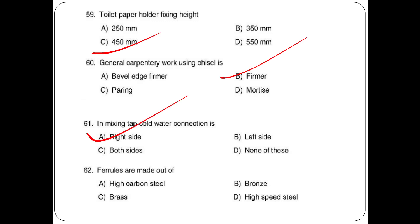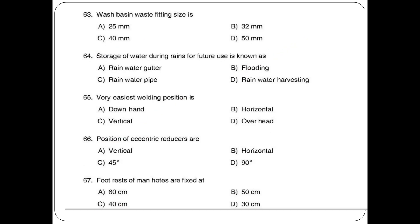Ferrules are made out of — options: high carbon steel, bronze, brass, high speed steel. The answer is option C: brass. Wash basin waste fitting size is option B: 32 mm. Storage of water during rain for future use is option D: rainwater harvesting. Easiest welding position is option A: down (flat) position. Position of eccentric reducers is option B: horizontal.